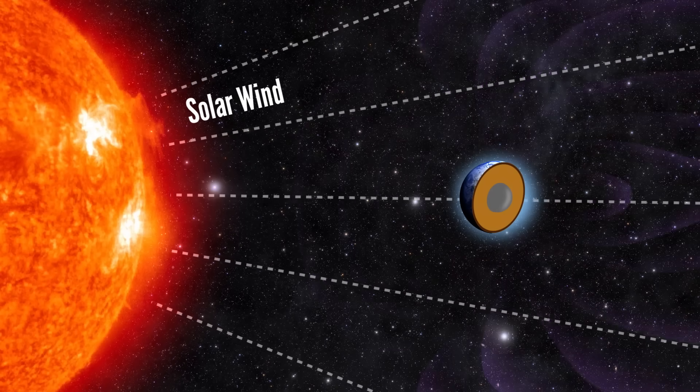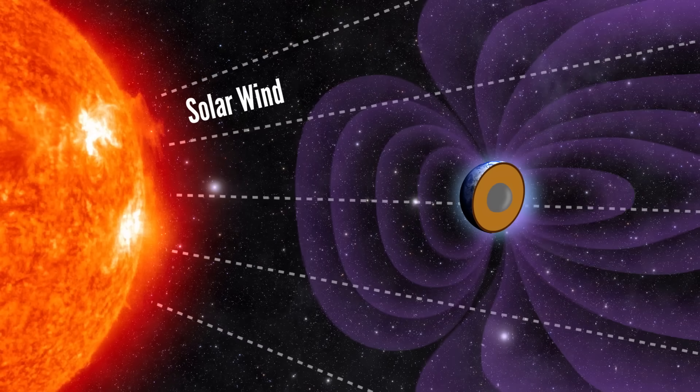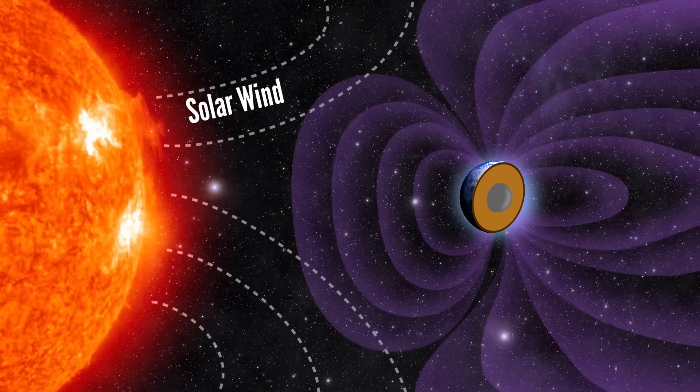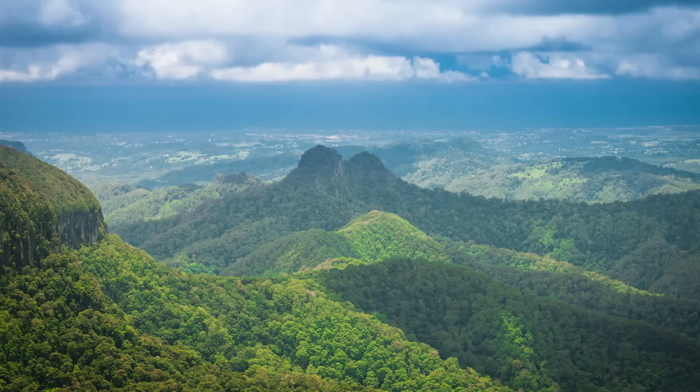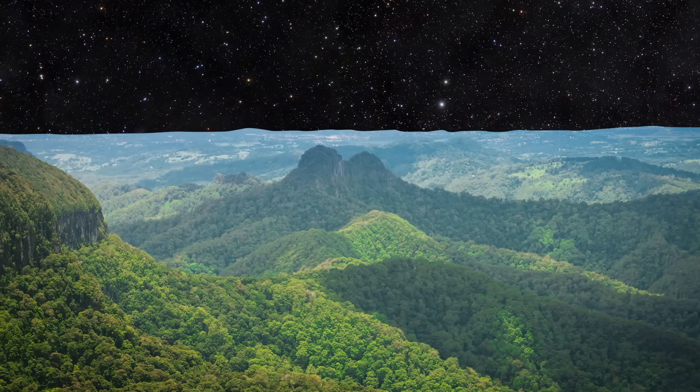Deep, metallic convection currents create a magnetic field that shields Earth from the solar wind. Otherwise we'd be pounded with deadly radiation. Our atmosphere would be blown away, and Earth really wouldn't be a very lifey place.